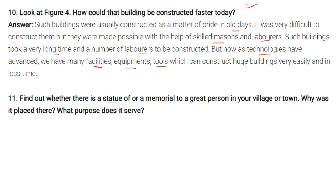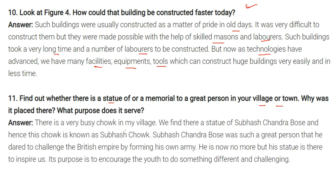Activity: Find out whether there is a statue or memorial to a great person in your village or town — why was it placed there and what purpose does it serve? For example, at a busy intersection or chowk in my village there is a statue of Subhash Chandra Bose — you can replace this with Ambedkar, Gandhi, or another person from your town. Subhash Chandra Bose dared to challenge the British Empire by forming his own army. His statue is there to inspire us, and its purpose is to encourage the youth to do something different and challenging.